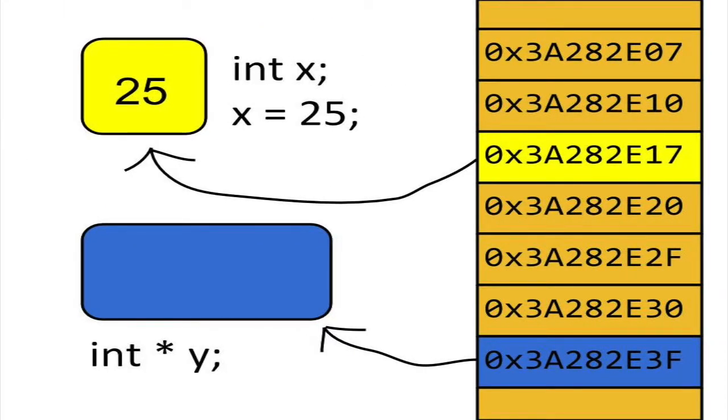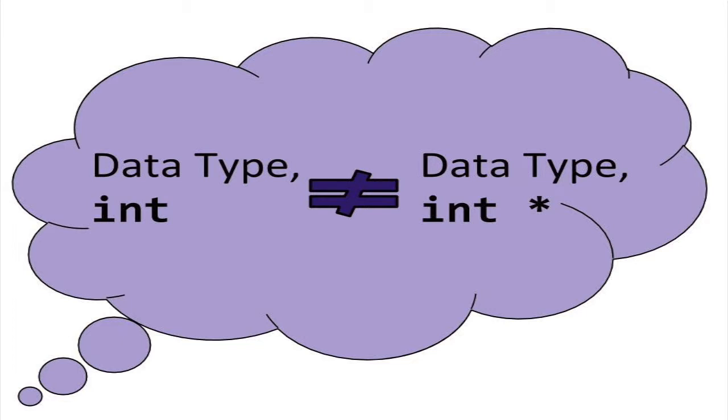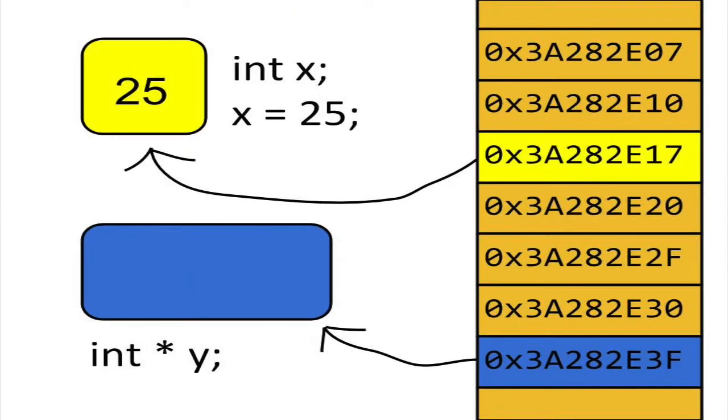Since a pointer is a variable, it's also a named location in memory. Suppose we declare a pointer to an integer. We will give the pointer the identifier y. Note that the data type of y is not int. The asterisk symbol tells us that y is not of int, but a pointer to an int. In other words, the data type of y is pointer to int.